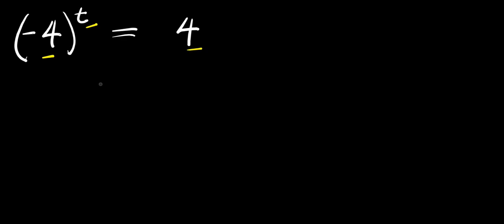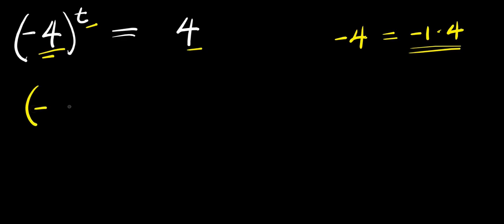What we are going to do is: negative 4 can simply be written as negative 1 times 4. So I will substitute this here — I'm going to have negative 1 times 4 raised to the power of t, and this equals 4.